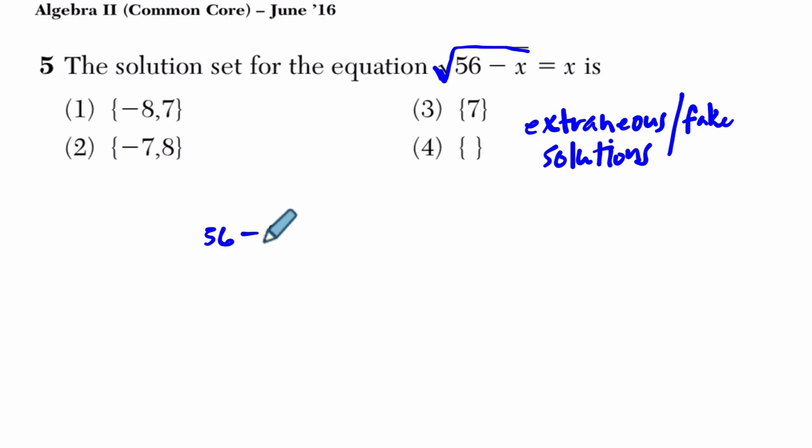So if you have √(56 - x) = x, and you have the square root of the left-hand side, what you want to do first, if you can, is square both sides. Set it up so you can square both sides.